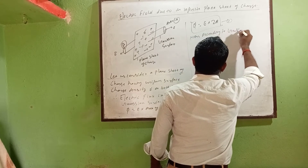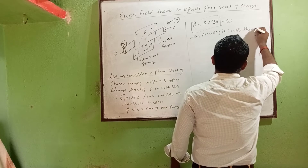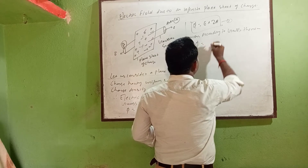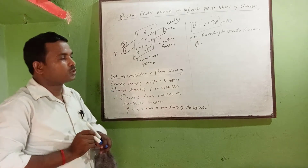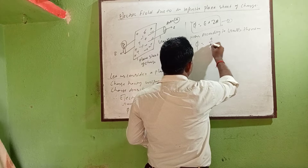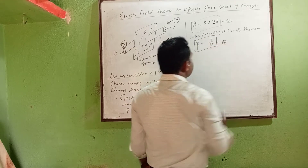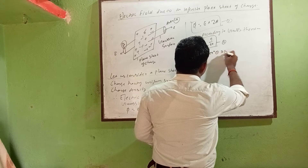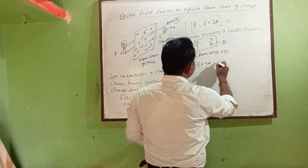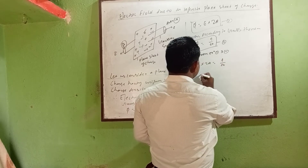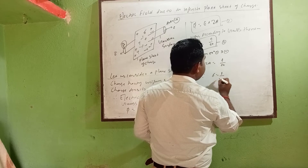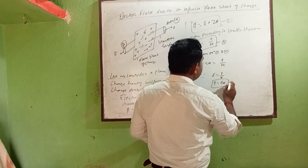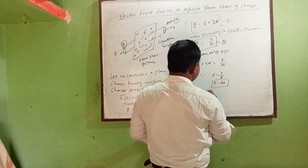According to Gauss's theorem, the formula is: phi equals Q by epsilon naught. Since Sigma is the surface charge density, we use phi equals Q by epsilon naught. This is equation 2. Now comparing equation 1 and equation 2, we can write: E into 2A equals Q by epsilon naught. We also have the formula: Sigma equals Q by A, so Q equals Sigma times A.